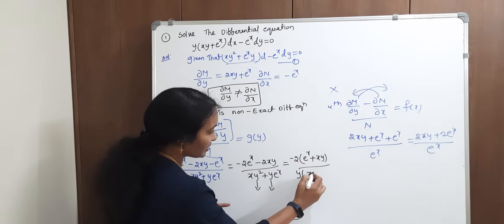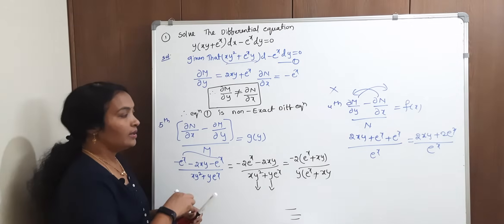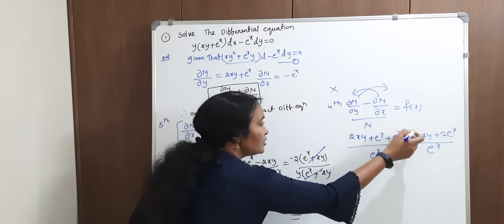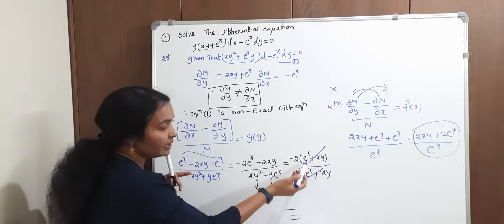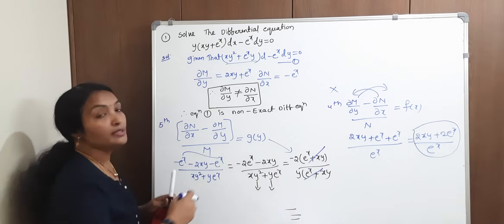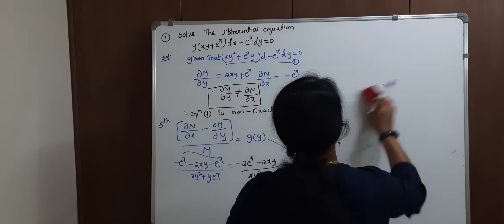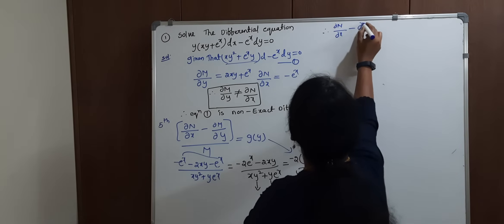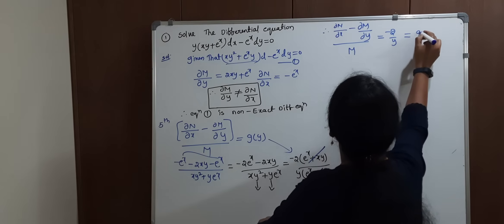What is the common term in the denominator? Y is the common term — take it out. What remains? x and y here, e power x here. So e power x and xy get cancelled. Taking out minus 2 and y, both cancel. The function becomes minus 2 by y, which is nothing but our G of y. Therefore, dou N by dou x minus dou M by dou y, divided by M, equals minus 2 by y, which is G of y.